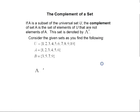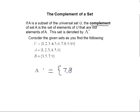Let's talk about the complement of a set. If A is a subset of the universal set, the complement of set A is the set of elements in the universal set that are not elements of A, denoted A complement. Our universal set is the natural numbers 1 through 10 and set A is the natural numbers 1 through 6. The complement of A will be everything in the universal set that's not in set A: 7, 8, 9, and 10.